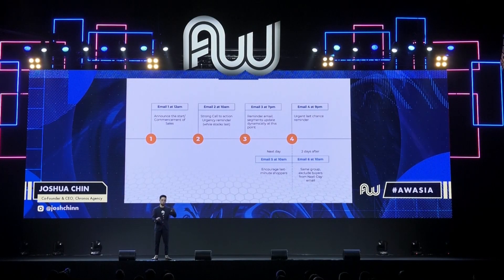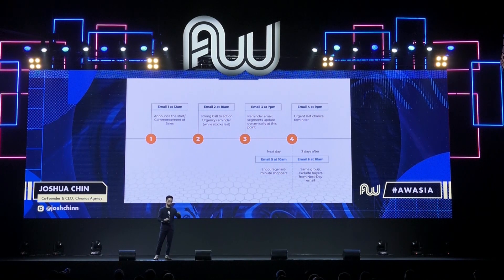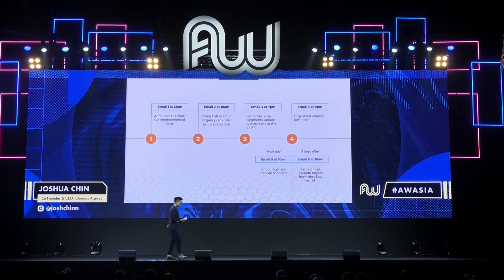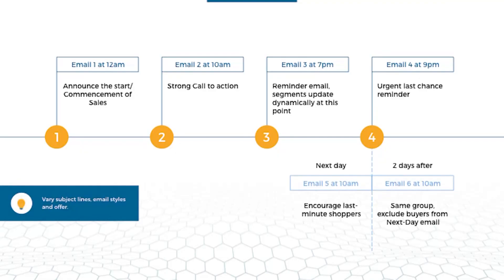Limit the number of links to just one or two. I'll show you what we do in the next slide for the next day and the two days after. And obviously you want to vary your subject lines, your email styles, and your offers. That brings us to Step 5.